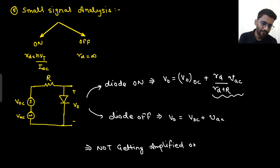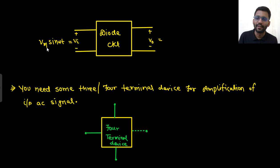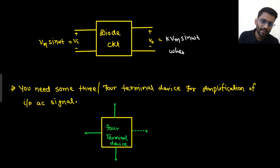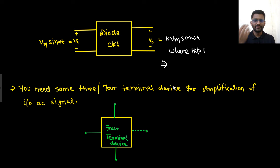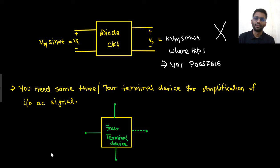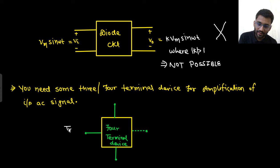Because we cannot get amplification from a diode circuit, if I want K·Vm·sin(ωt) where |K| > 1 — this is not possible with a diode. So we need a three- or four-terminal device for amplification of the input AC signal. Terminal one, terminal two, terminal three, and terminal four — and one of the terminals will be the controlling terminal.